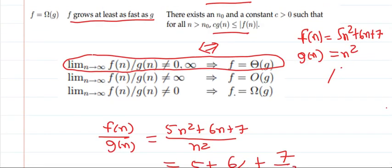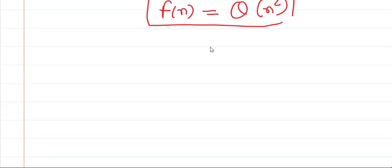Intuitively we can also see why the second and third definitions hold. If g(n) is the dominating term compared to f(n), then the limit f(n)/g(n) will be zero, and at that time we can say f is Big O of g(n) — that is the idea behind the second definition. Similarly, if f(n) is the dominating term compared to g(n), then the limit will be infinity, and we can say f grows at least as fast as g — that is the idea of the third definition.